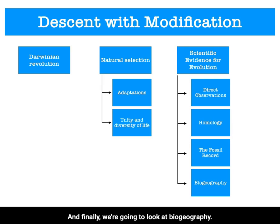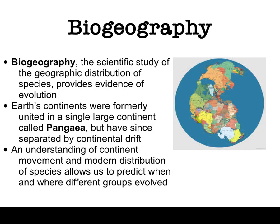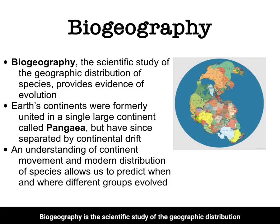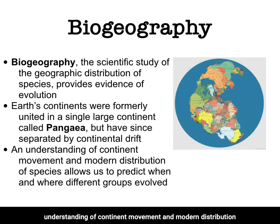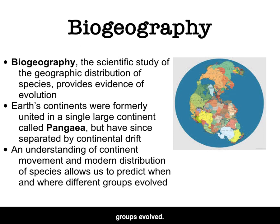Finally, biogeography is the scientific study of the geographic distribution of species, and this provides evidence of evolution. Earth's continents were formerly a single large continent called Pangaea, but have since separated by continental drift. An understanding of continent movement and modern distribution of species allows us to predict when and where different groups evolved.